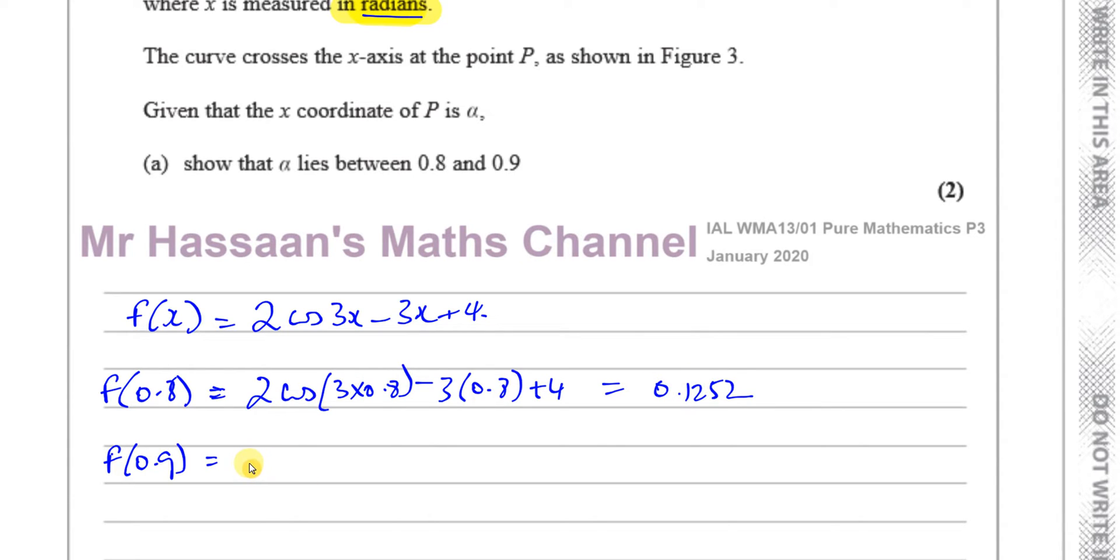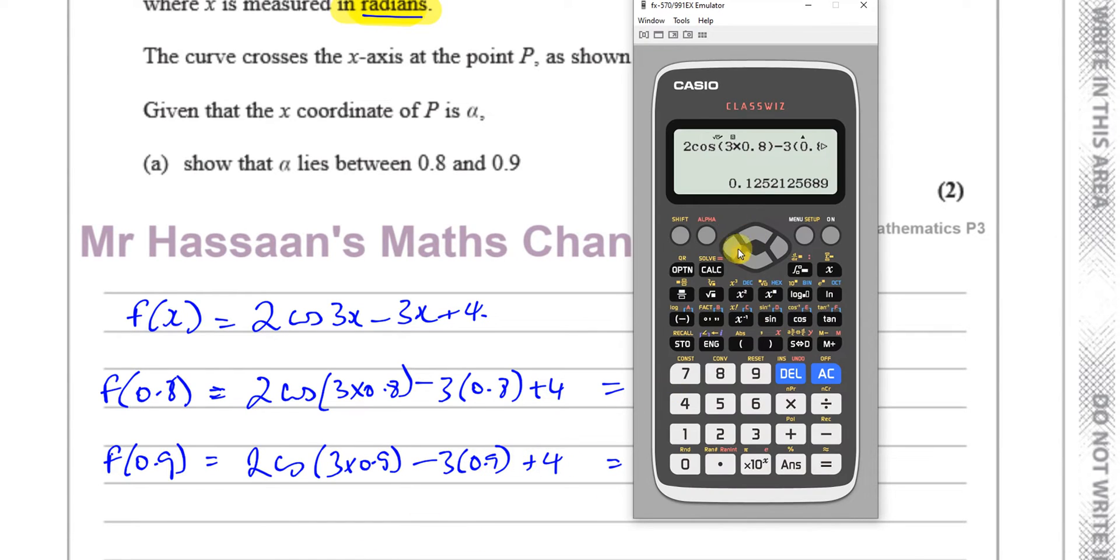And when I put 0.9 in here, okay, I have 2 times the cosine of 3 times 0.9 minus 3 times 0.9 plus 4. What do I get? Just replace this with 0.9. And I get negative 0.5081. Negative 0.5081.